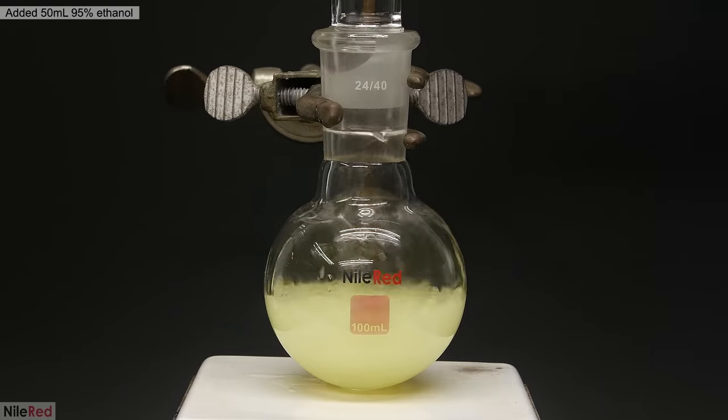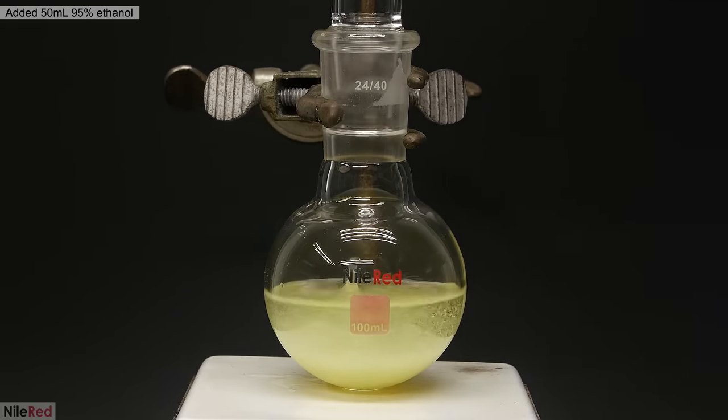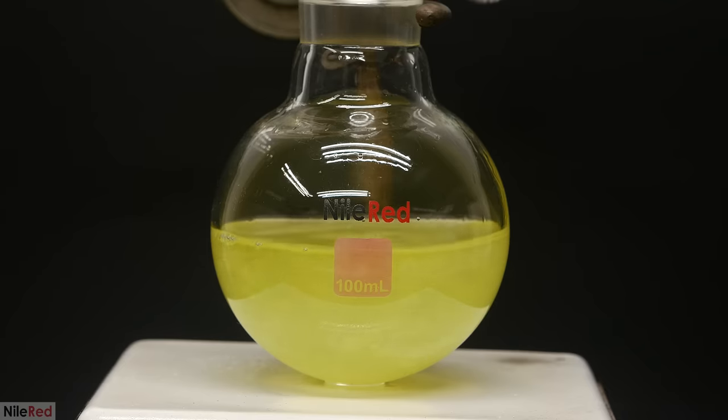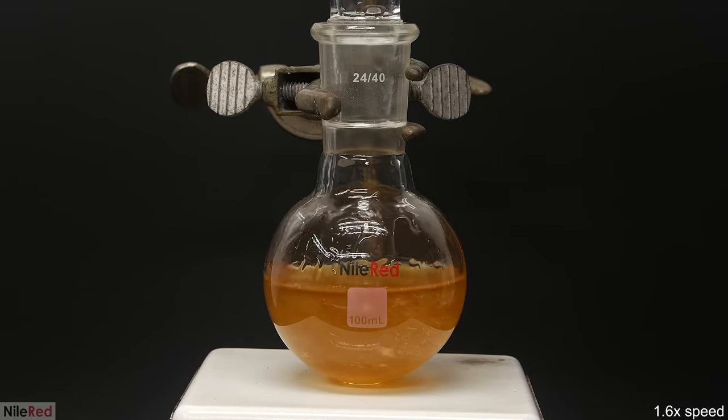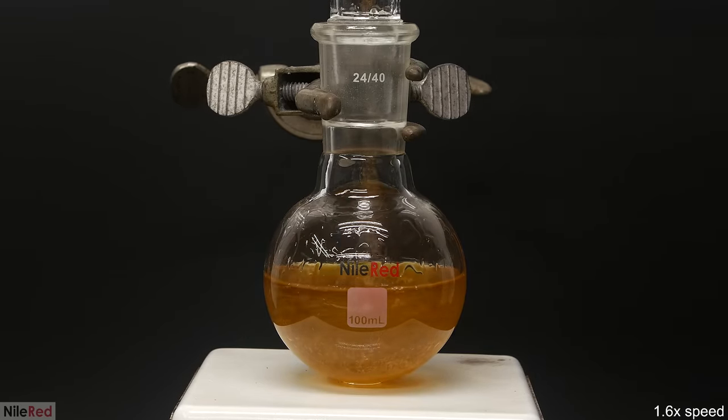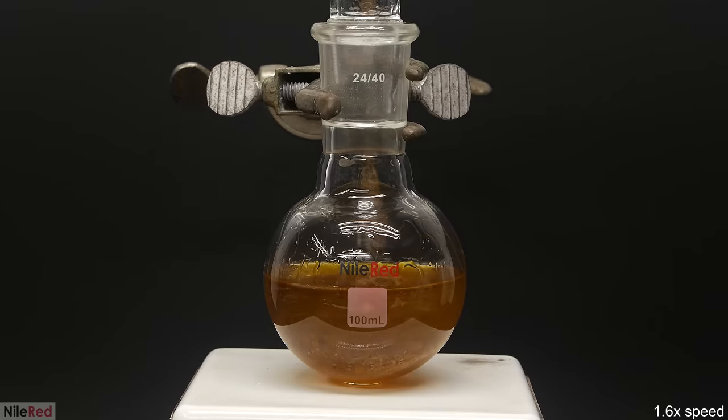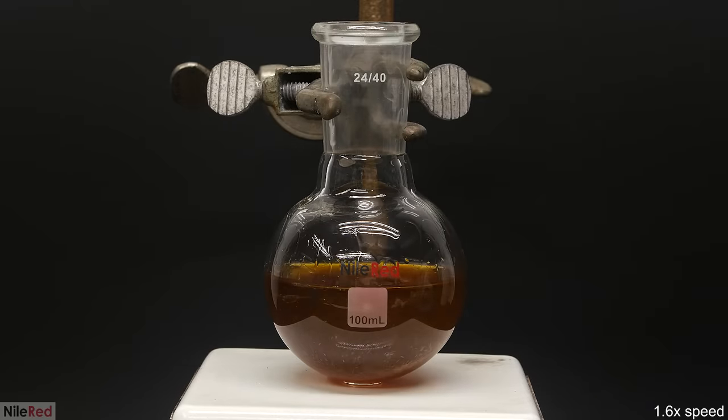Anyway, on top of this, I poured in 50 mils of 95% ethanol, and stirred it for a few minutes for things to dissolve. Then I added the concentrated potassium hydroxide solution that I made like a minute ago. It caused an immediate change in color, and a lot of the stuff that was still undissolved started to disappear.